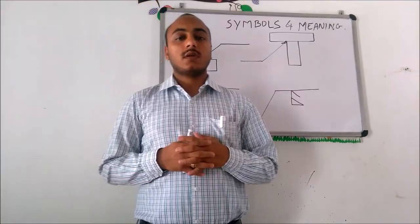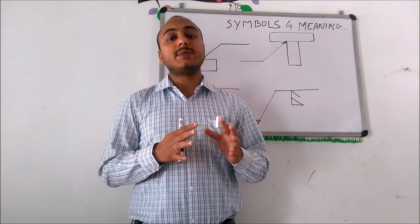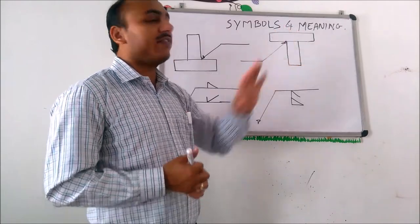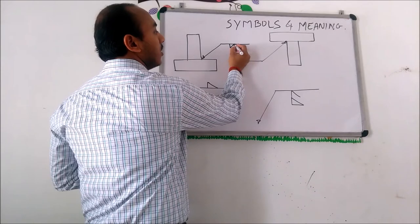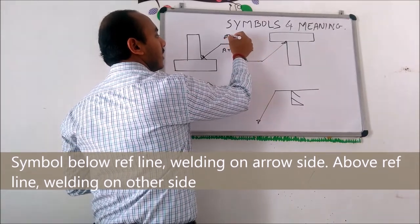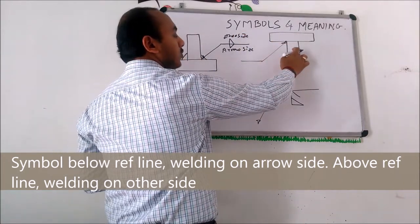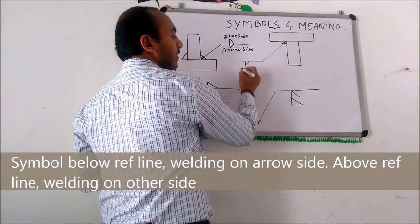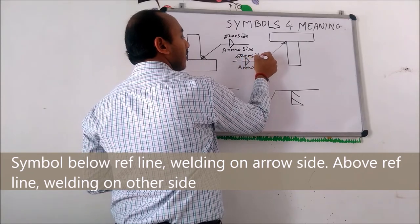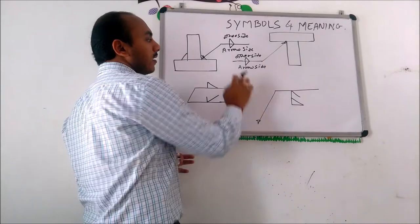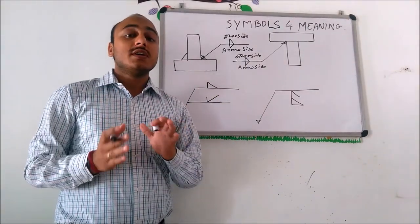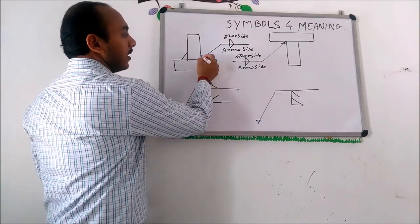Now we will discuss application of symbols and their meaning based on AWS standard only. Suppose we have two components we are joining. If we define welding below the reference line that will be on the arrow side only; if we define welding above that is the other side. Always remember: below the reference line is arrow side, top of the reference line is other side.